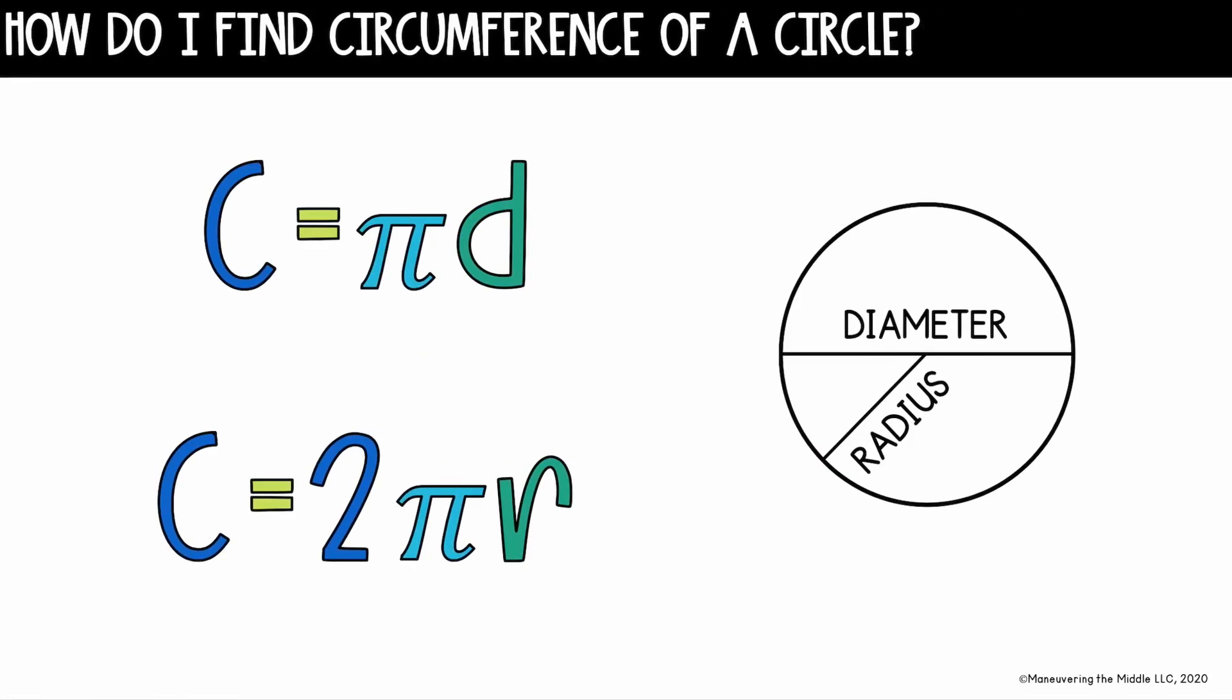To write the formula for finding circumference, there's two ways that you can write it depending on what information you're given. First, if you have a circle, and they label or give you the diameter, we'll use this first formula, C equals pi d, which simply means circumference equals the value of pi, we will estimate with 3.14, multiplied by the diameter.